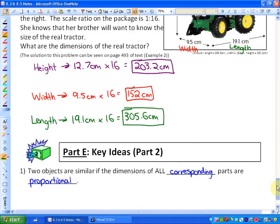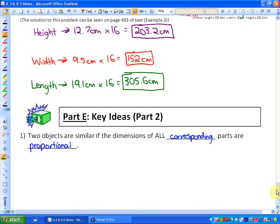So in conclusion, to do scale diagrams and scale factors for three-dimensional objects, just one key idea: two objects are similar if the dimensions of all the corresponding parts are proportional. So all the corresponding parts, like the frying pan's depth, diameter, and handle, all have to be proportional to each other if they're going to be called similar.